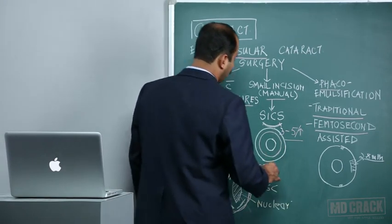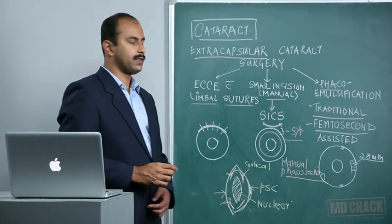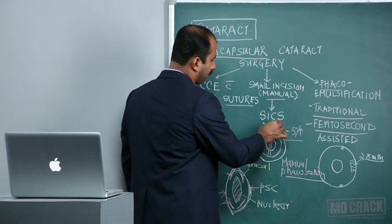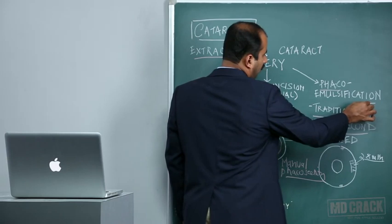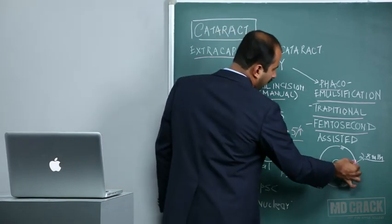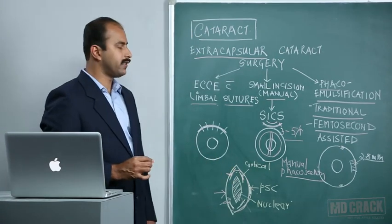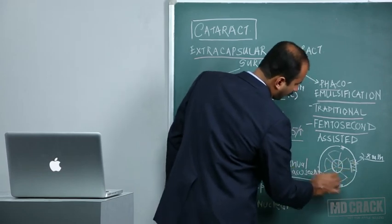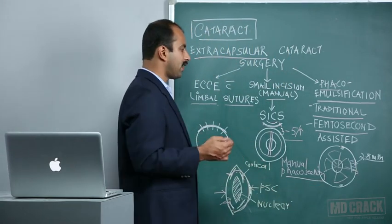Modifications of the SICS technique called manual phaco section use devices that split the nucleus manually and remove it piecemeal, further reducing the incision size, though manipulations in the anterior chamber risk damage to the corneal endothelium. Phacoemulsification, the procedure that has stood the test of time for the last two decades, involves at least two small incisions — one around 2.8 to 3 millimeters and one barely one millimeter — to remove the entire nucleus as fragments created by the phaco emulsifying probe and a second instrument, aspirated through the phaco probe.